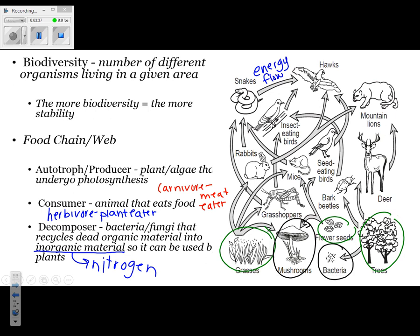One type of question that might appear on the regents would be: if there was an increase in the mouse population, what would happen to the snake population? You need to follow the arrow to see that it points to snakes. If there are more mice, the snake population would go up because it has more food to eat.